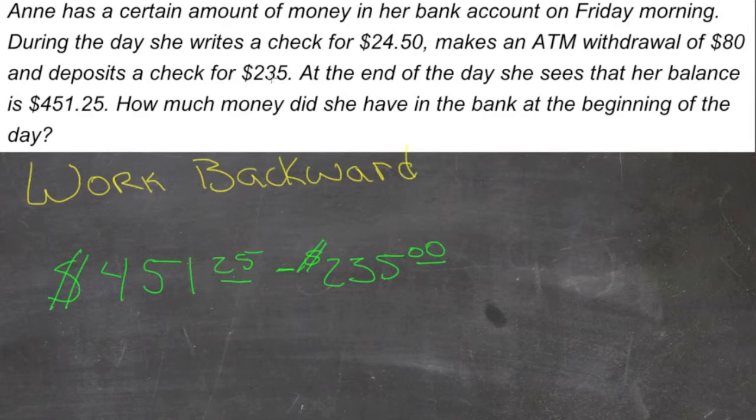And then, at that time, she had just made an ATM withdrawal of $80 and written a check for $24.50. So those two things were in her account at the beginning of the day and came out during the day. So those are values that we need to add back in. So we're going to add $80 and $24.50.